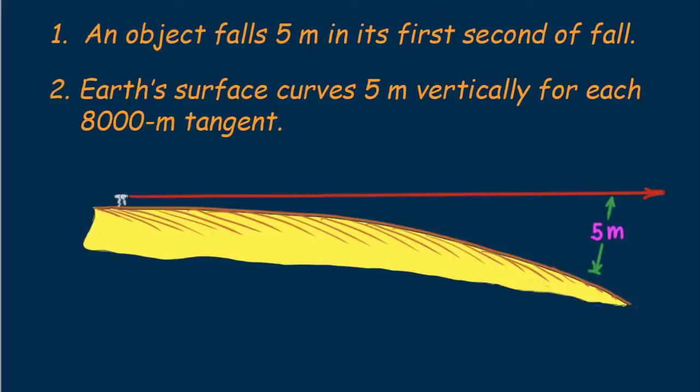Now suppose we replace the laser with a super cannon one that can fire cannon balls with incredibly high speeds. Furthermore we pretend there is no air resistance. What we want to do is calculate what Newton calculated but in a different way. To begin suppose we fire the cannon ball at a speed of 2 kilometers per second. Then at the end of one second with no earth gravity the cannon ball will have reached 2,000 meters down range that's 2 kilometers.